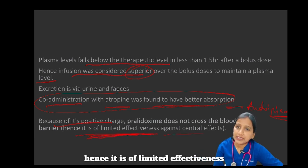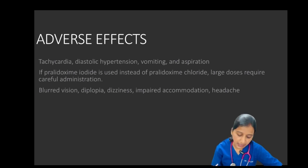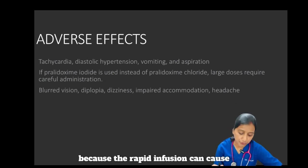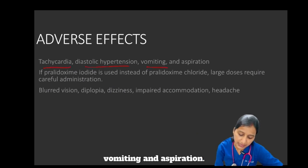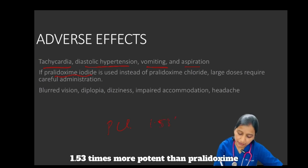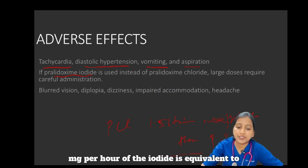Because of its positive charge, pralidoxime does not cross the blood-brain barrier and hence is of limited effectiveness against central effects. Coming to adverse effects: the loading dose of the oxime should be given slowly, because rapid infusion can cause tachycardia, diastolic hypertension, vomiting, and aspiration. Pralidoxime chloride is 1.53 times more potent than pralidoxime iodide.